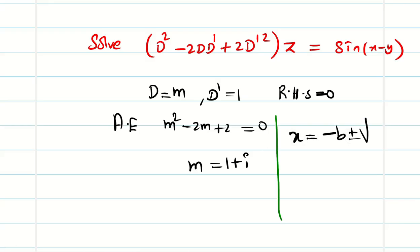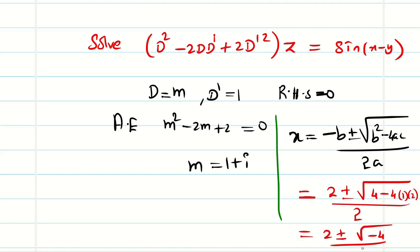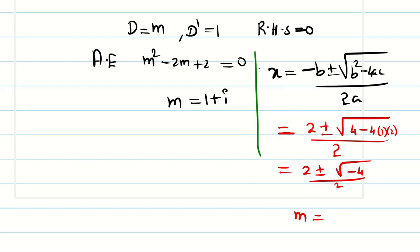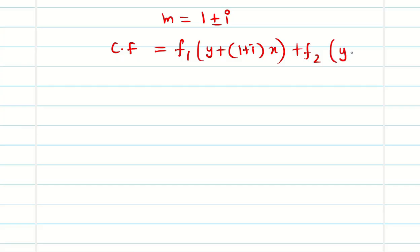Recall the formula: x = (-b ± √(b² - 4ac)) / 2a. Here b = -2, so minus of minus is 2; b² = 4, 4ac = 4·1·2 = 8. So we get 2 ± √(4 - 8) / 2 = 2 ± 2i / 2 = 1 ± i. Therefore the complementary function with m = 1 ± i is: CF = f₁(y + ix) + f₂(y + (1-i)x), with distinct roots.